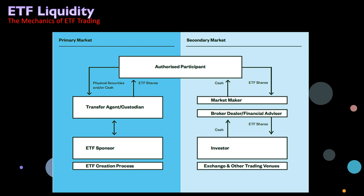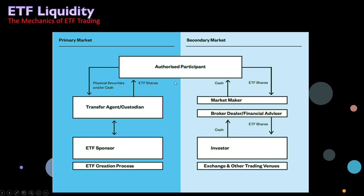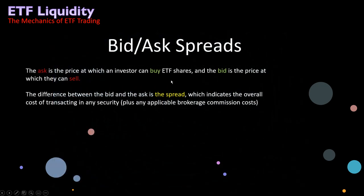Market makers can be authorized participants and can play the role of both, though they are not the same thing — market makers typically play the role of AP. Now, bid-ask spreads: the ask is the price at which an investor can buy ETF shares, and the bid is the price at which they can sell. The difference between the bid and the ask is called the spread, which indicates the overall cost of transacting in any security, plus any applicable brokerage commission costs.